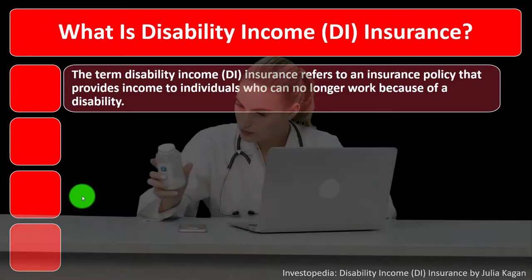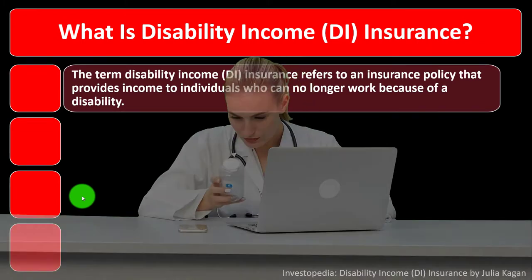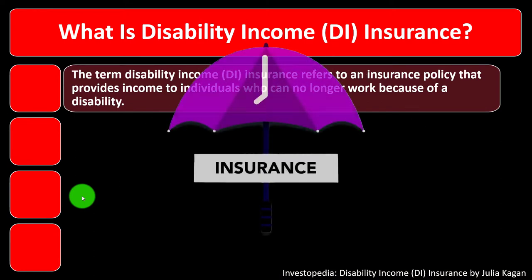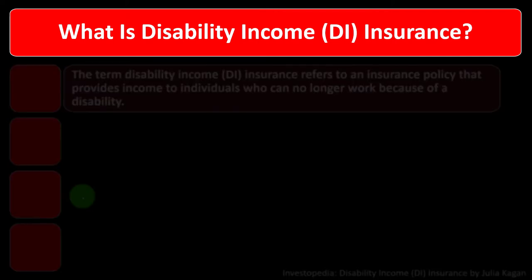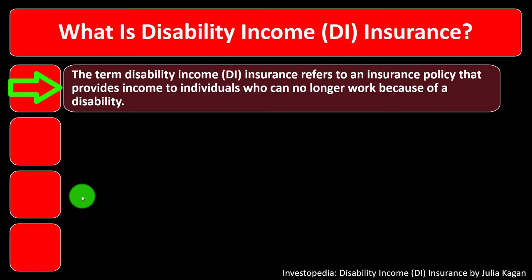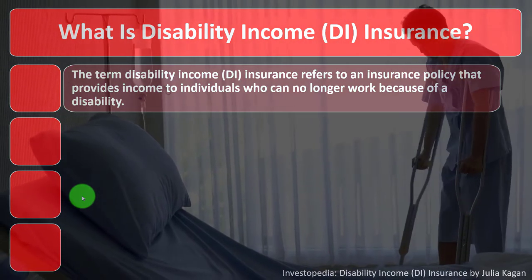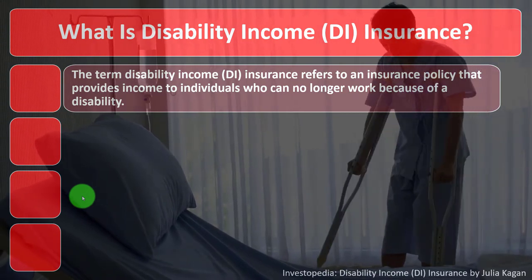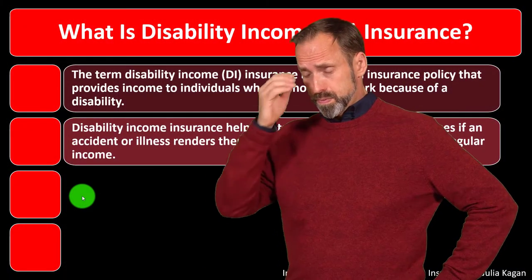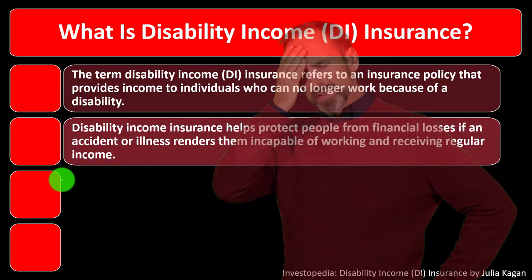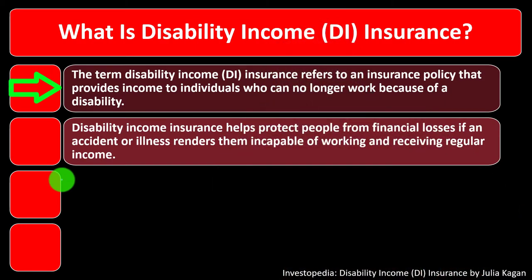The medical insurance area confuses things a little when thinking about classic insurance because medical also expanded to cover normal preventative care. Keeping those overall insurance concepts in mind, disability income DI insurance refers to an insurance policy that provides income to individuals who can no longer work because of a disability. Disability happens, you can't work, the income stream you were dependent on is no longer available — that's a risk we might be able to mitigate with insurance.